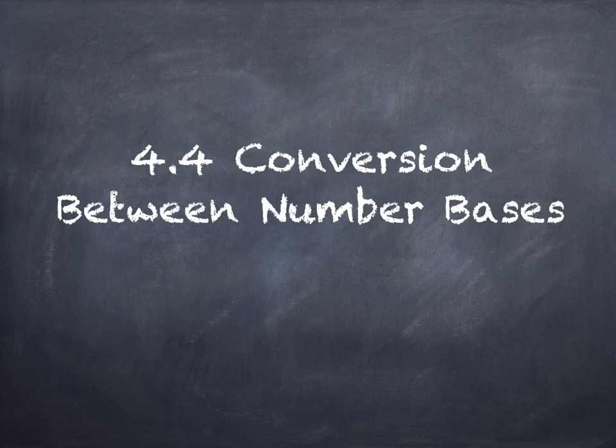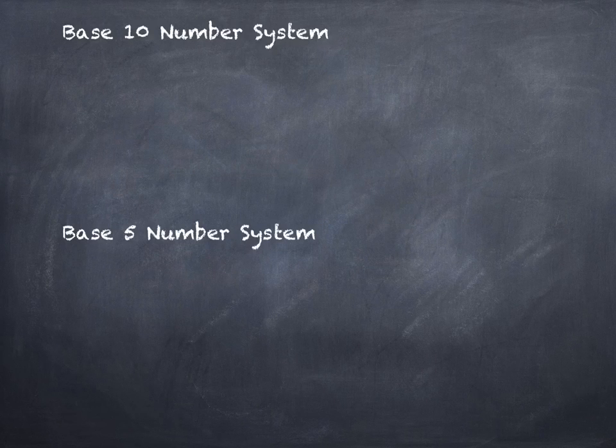What else have we converted into? Base 60, which was the Babylonians. So what we're going to work on in this section is other base systems — anything besides the ones we've looked at already. Before we can actually convert between them, we're going to talk a little bit about what they look like, and we're going to start with the system you're most familiar with: our base 10 number system.